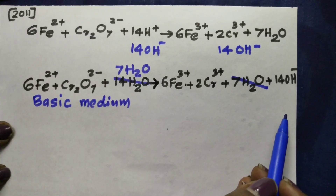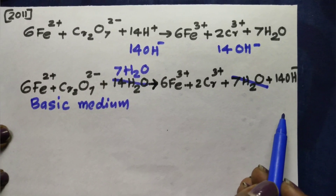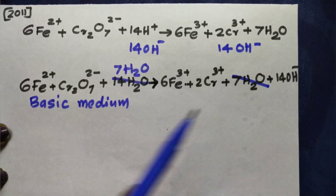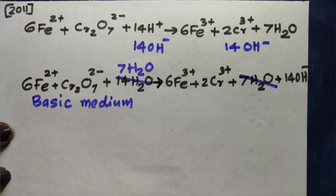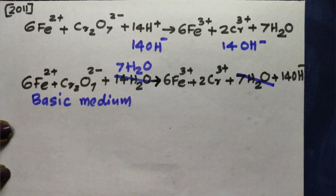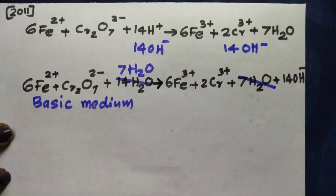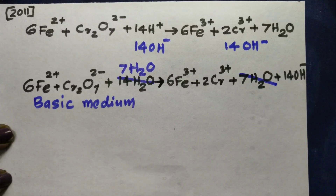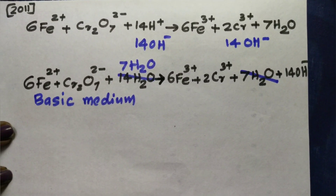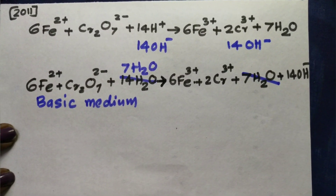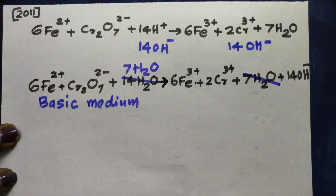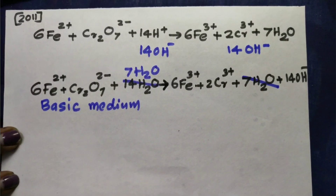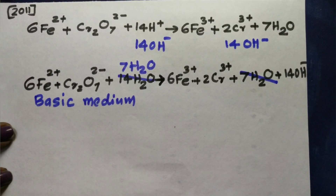This is the half-reaction method. Oxidation method is the last step. This is the basic method. Please do this. If you have any steps, learn them by heart to make a full mark. Thank you.